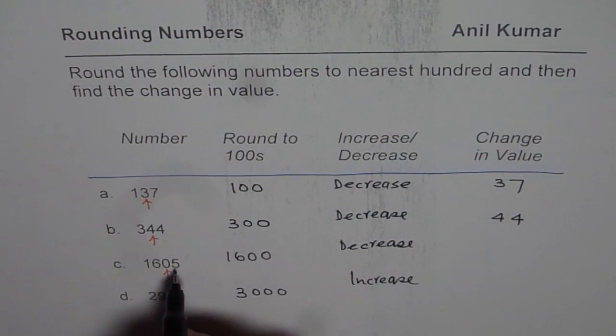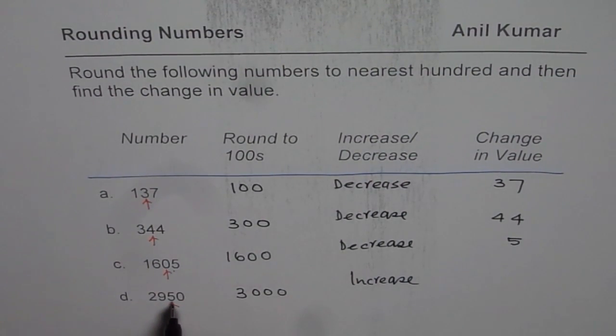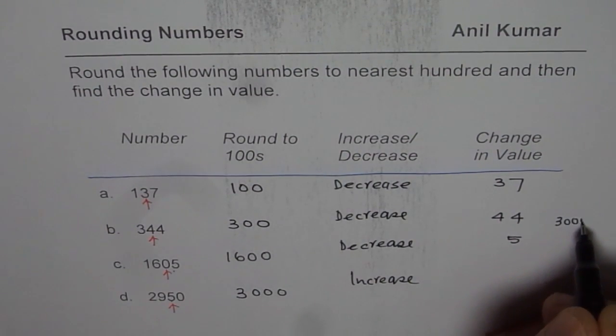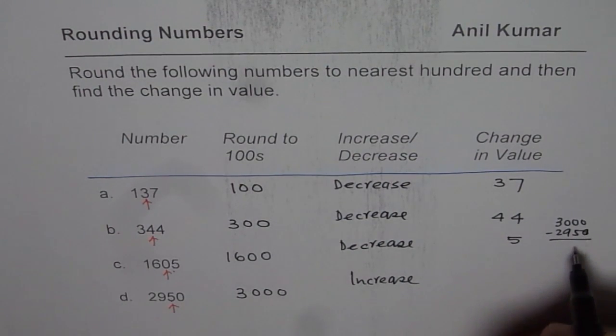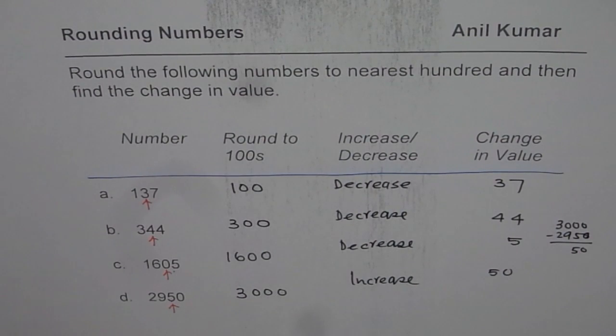1,605 take away 1,600 is 5. 2,950. Now that has increased to 3,000. So we will take away 2,950 from 3,000. You can do it on the side also. You can say 3,000 take away 2,950. And what we get is the number 50. So this number has increased by 50.